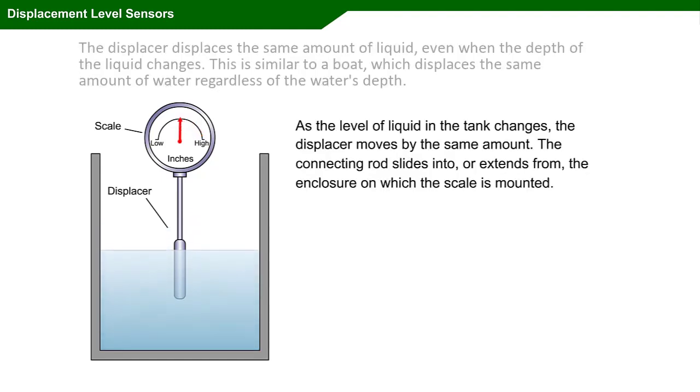As the level of the liquid in the tank changes, the displacer moves by the same amount. The connecting rod slides into, or extends from, the enclosure on which the scale is mounted.